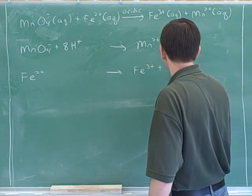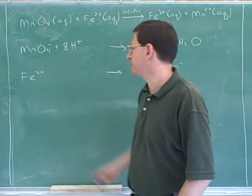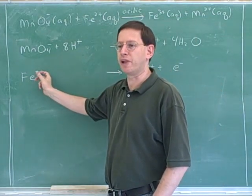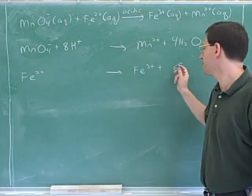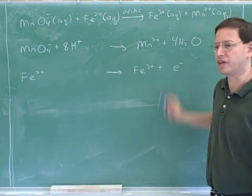Now like I said, people tend to make a lot of mistakes about this. Let's double check. On the left hand side, we have a total charge of 2+. And on the right hand side, we have 3 minus 1, which is 2+. So we got this correct. Very good.